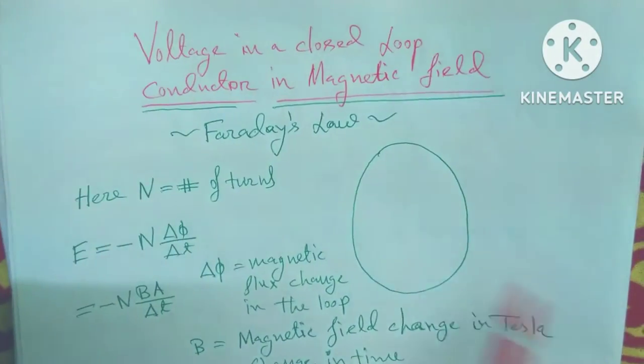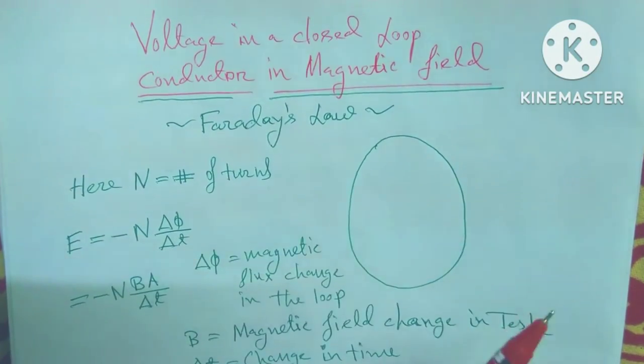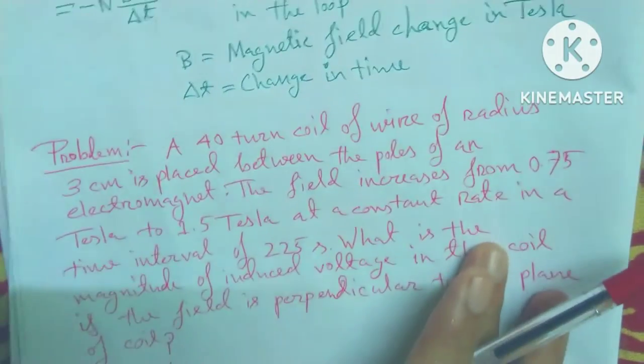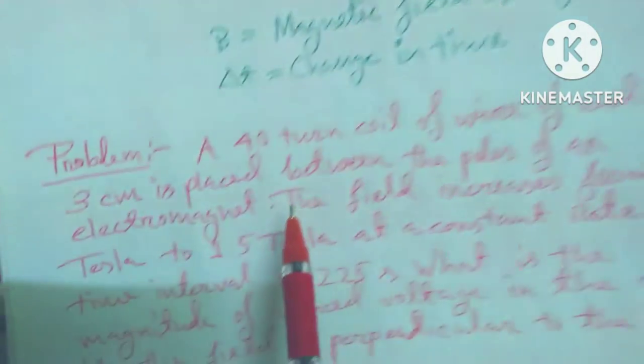This is the formula for a conductor in a closed loop. So now we start to solve a problem.